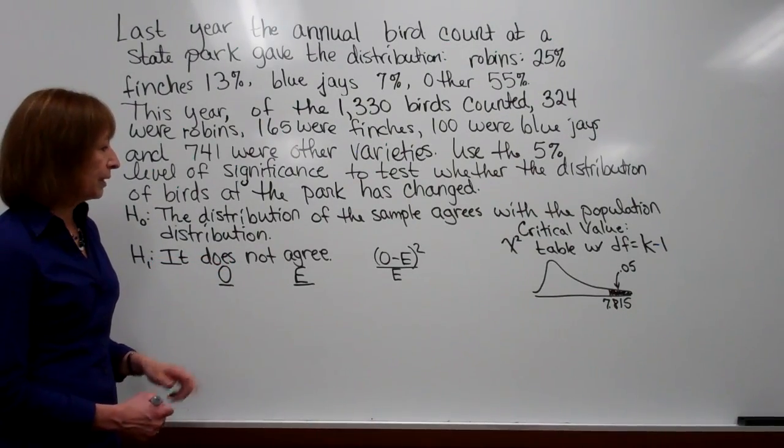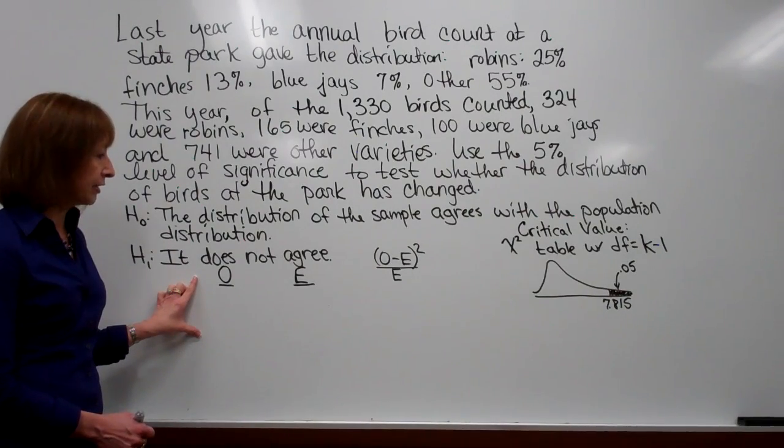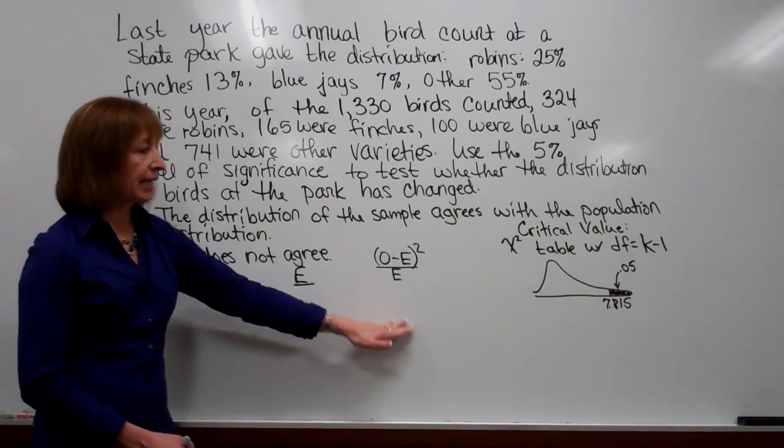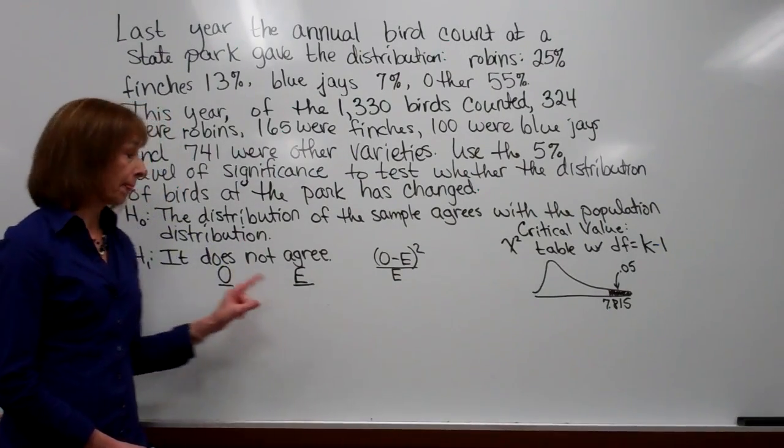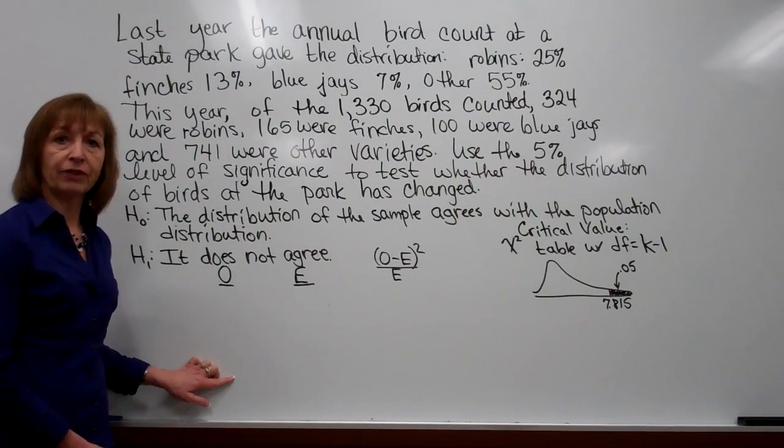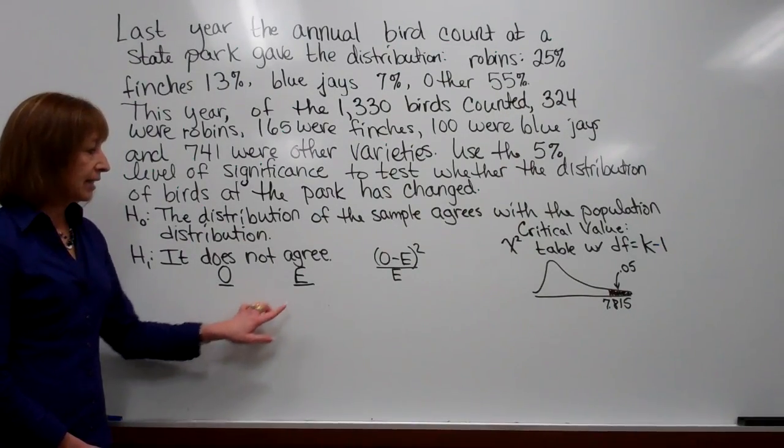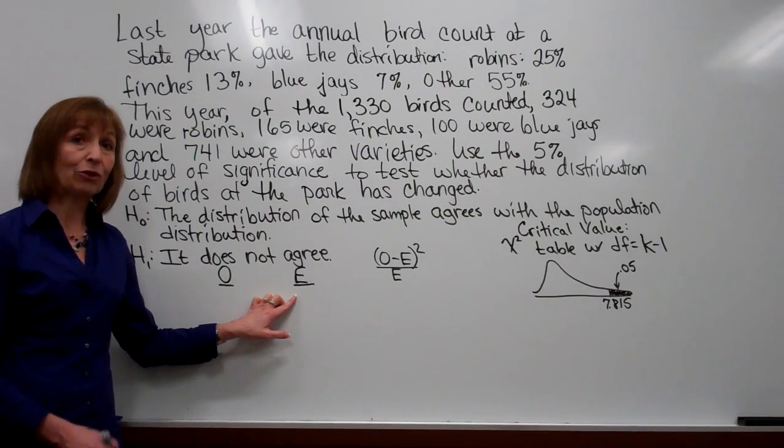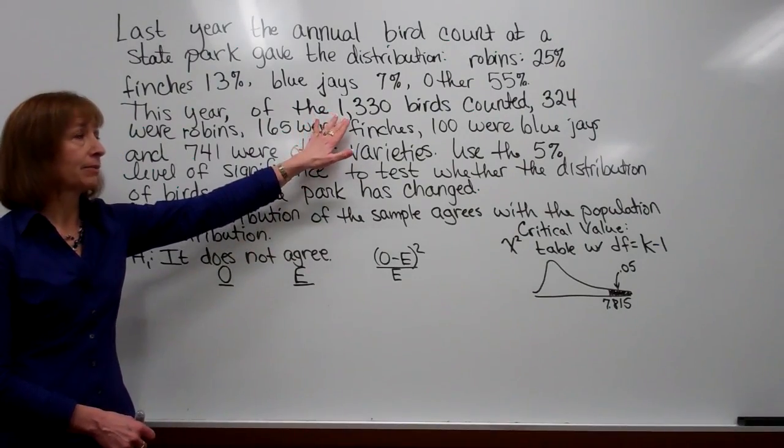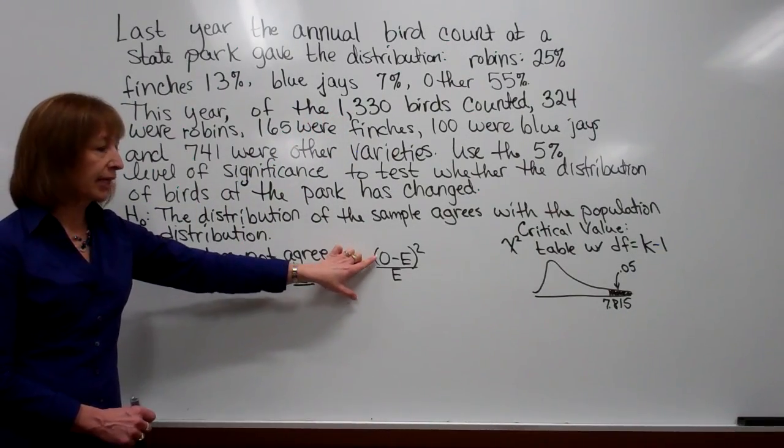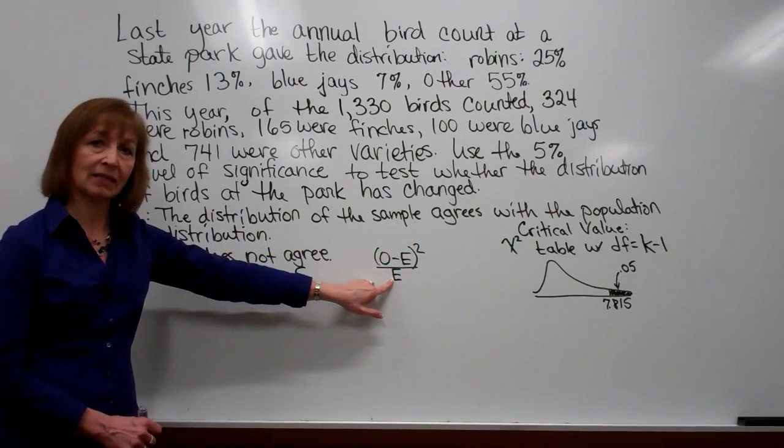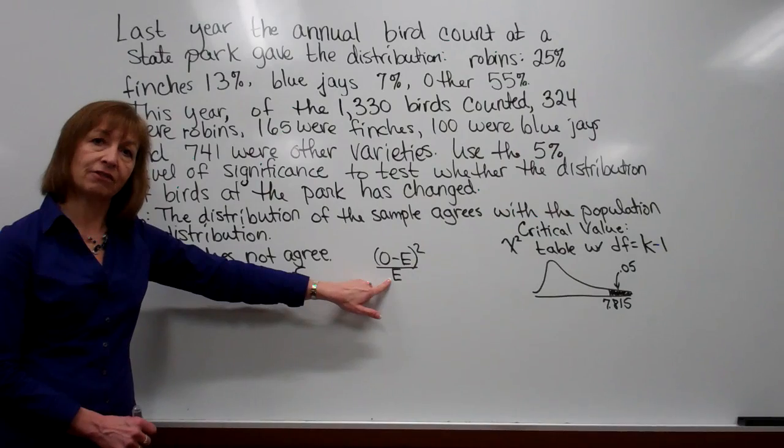Now let's look at what we need to do to calculate out the work for this if we're going to do it by hand. We're going to make columns of values that we get from the setup of the problem. Our first column is going to be the observed numerical values for each of the categories. Then we're going to calculate the expected value based on the previous distribution and the number of items that you sampled this time. And then do a calculation of the quantity observed minus expected squared divided by expected. We're going to do that for each of the values.